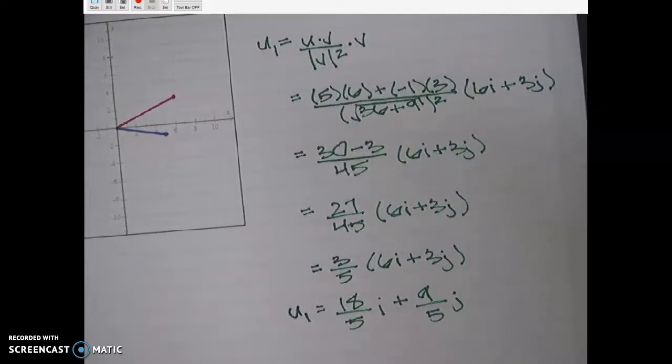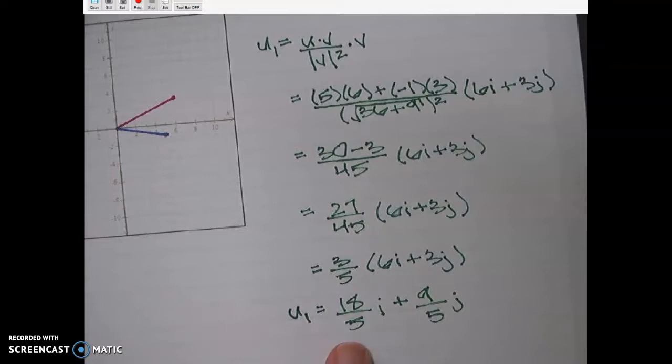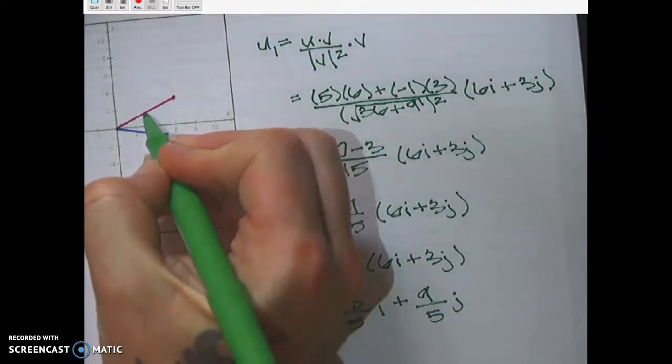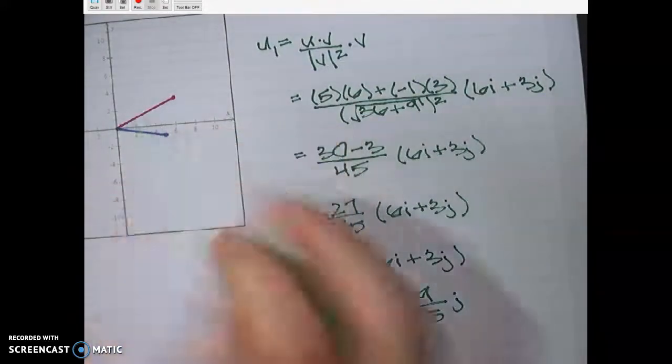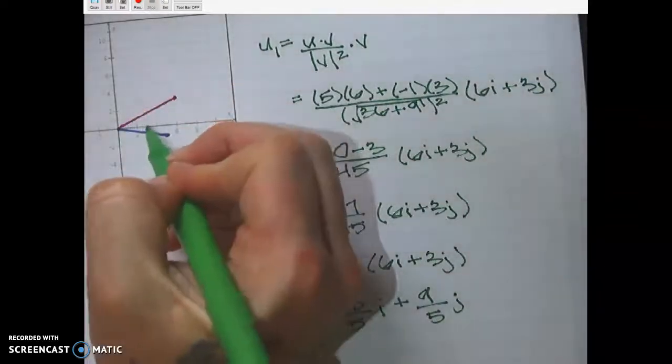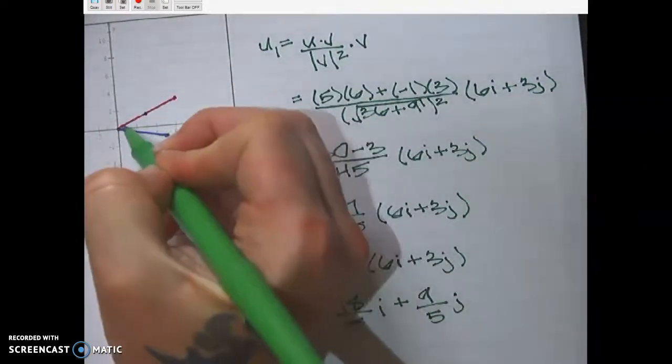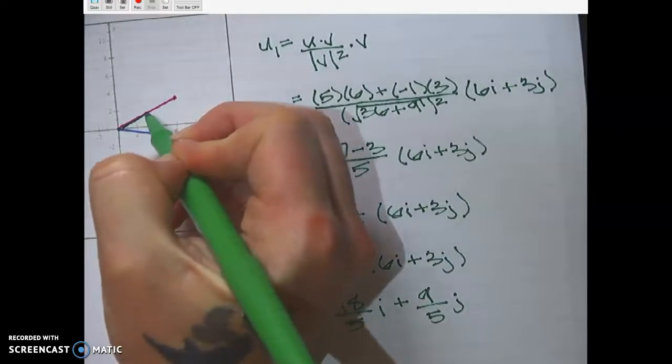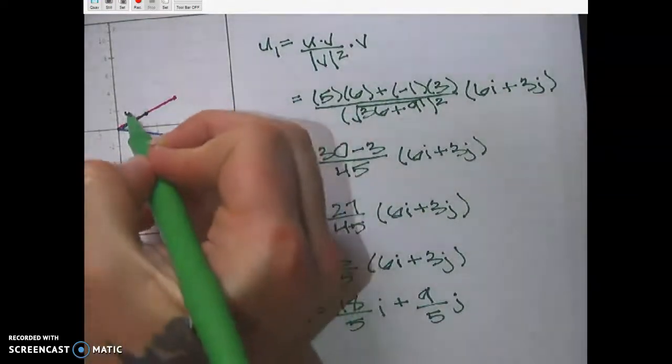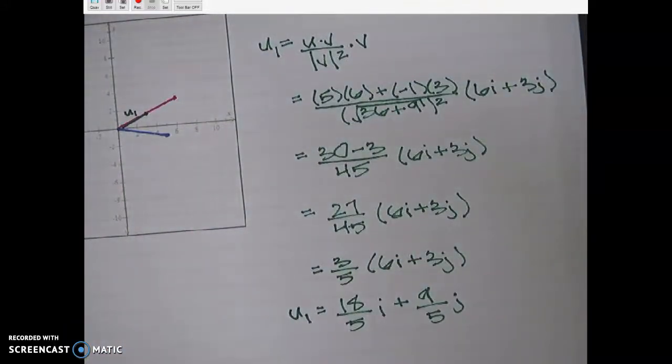And so that u sub 1, let's see, 18 over 5 is what, 3 and 2 fifths, right? I'm sorry, 3 and 3 fifths, right? So 3 and a little bit by 1 and a little bit, so let's see. So that little spot right there is going to be u1. So that's the part of u, that's the part of the decomposition that is parallel to v.